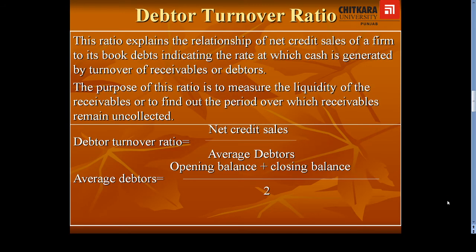The next ratio is Debtors Turnover Ratio, which establishes the relationship between net credit sales and average debtors. This ratio will tell us how efficiently — or how many times — we are collecting our money from our debtors. The purpose of this ratio is to measure the liquidity of receivables, or to find out the period over which receivables remain uncollected.